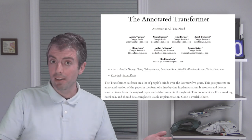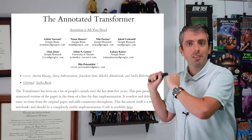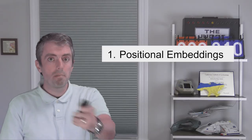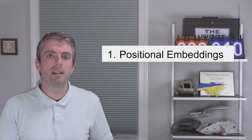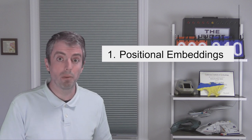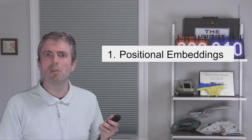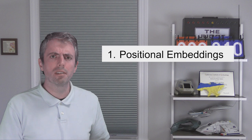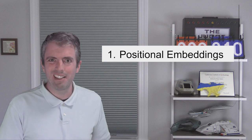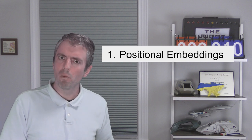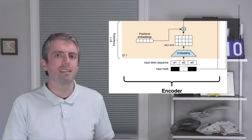If you haven't checked those out, I'd strongly encourage you to do so. First up: positional embeddings. Unlike the RNN or LSTM, where the structure of the network implicitly encodes the order of words, a transformer doesn't have anything like that. So how does it know what word is where? Positional embeddings.